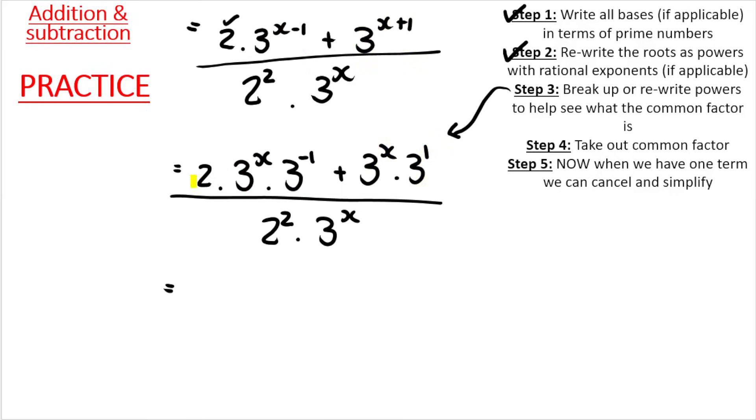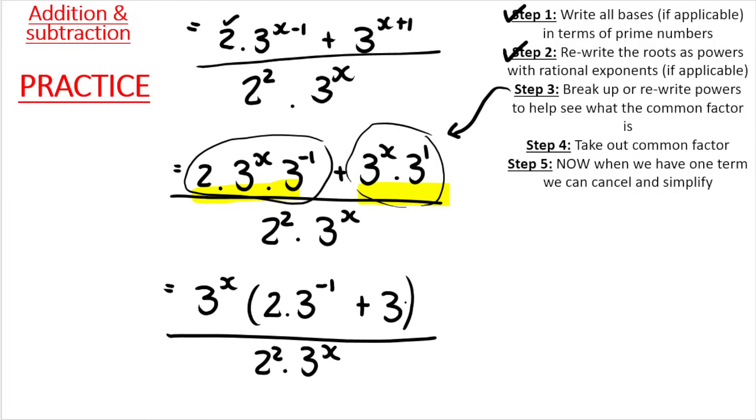Now what I can do is factorize. So I've got two terms at the top. What do they have in common? 3 to the power of x. What's left over from the first term? So divide the first term by the highest common factor: 2 and 3 to the power of negative 1. What's left over from the second term? So take the second term and divide it by your highest common factor: 3. Remember the plus gets carried down. 3 to the power of 1. At the bottom, I can't factorize. You leave it as is. Now because I have one term at the top, one term at the bottom, I can cancel those. And then essentially, this is what I have in my numerator and my denominator. You can do baby step math in between if you don't have a calculator. But what you end up getting is 11 over 12.